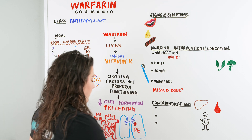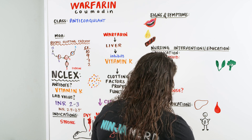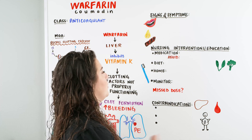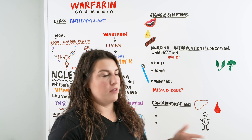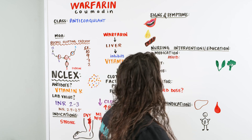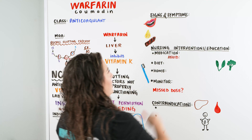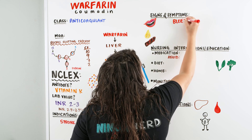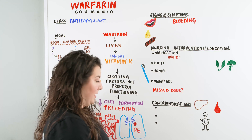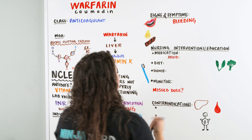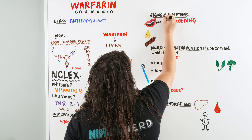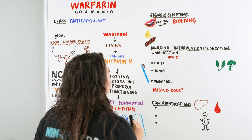If a patient is taking this medication, what are the signs and symptoms of adverse drug reactions — meaning the anticoagulant is working too well? The first thing is any type of bleeding. For example, if they're brushing their teeth and seeing bleeding gums, that could be a sign that the INR is approaching a level that's too high.